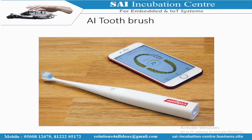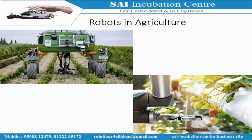The AI toothbrush can detect which areas of your teeth you're concentrating on and which areas you're neglecting. All this data is sent to your mobile app. It sends alert messages whenever there is a possibility of a cavity, so you can take precautions early instead of waiting until you feel pain and visit a dentist. Students should be aware that companies like Dominos and Colgate also have robotics and AI units with job opportunities.